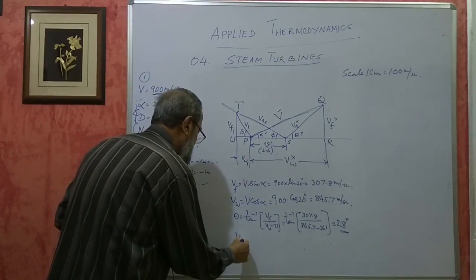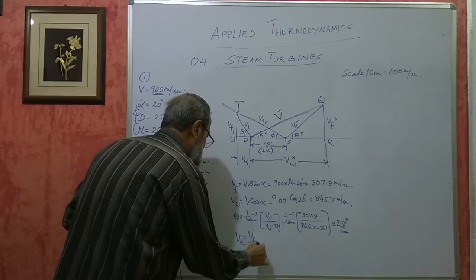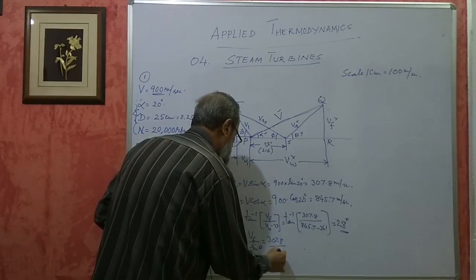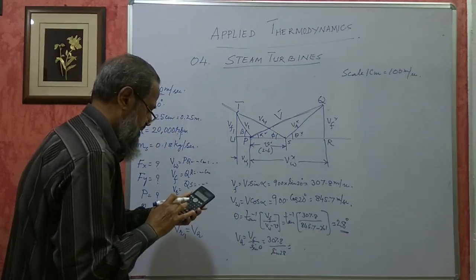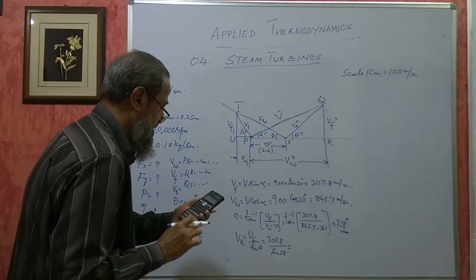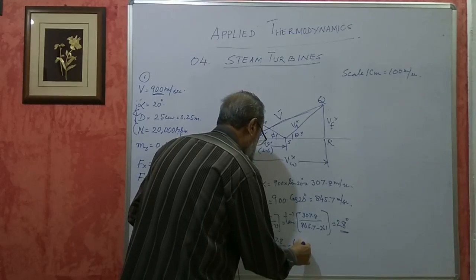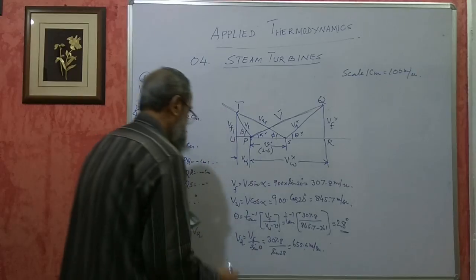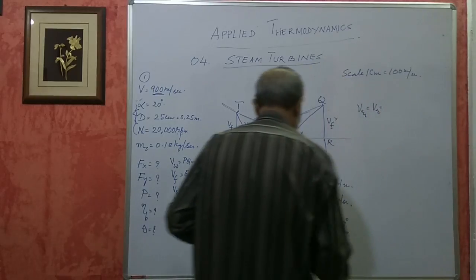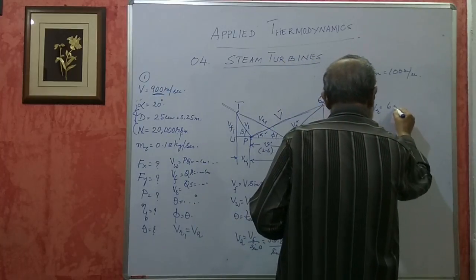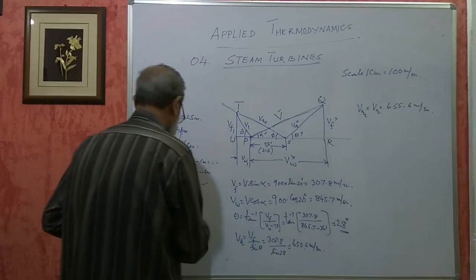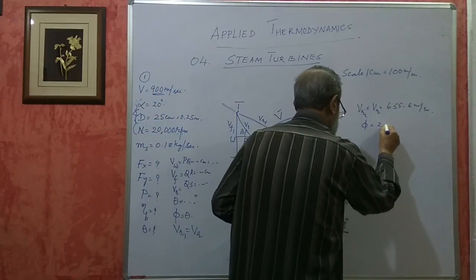Vr = Vf / sinθ = 307.8 / sin28° = 655.6 m/s. Since no friction factor or velocity coefficient is given, Vr1 equals Vr, so Vr1 is also 655.6 m/s. And since phi equals theta, phi is also 28 degrees.